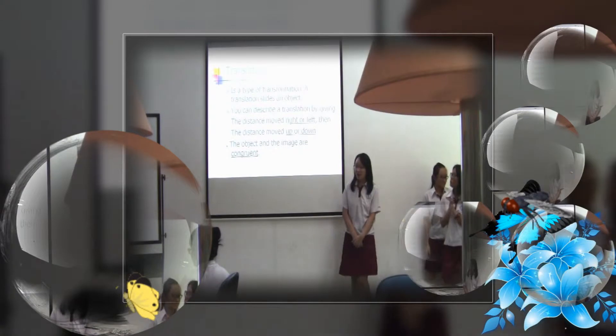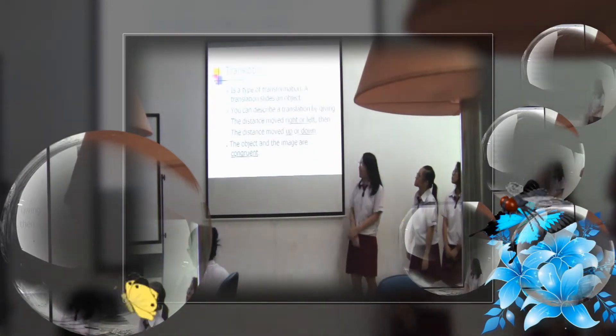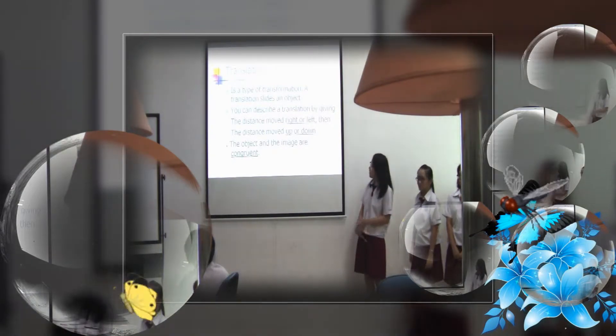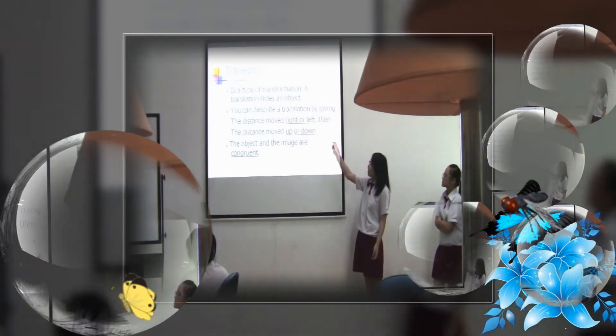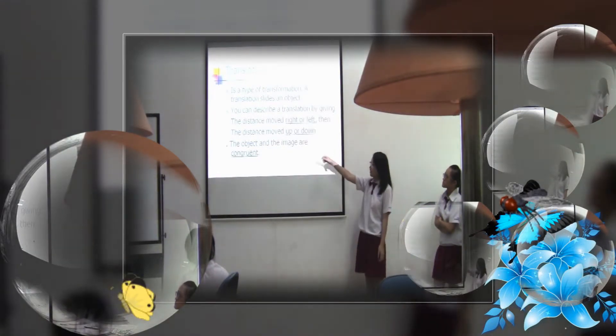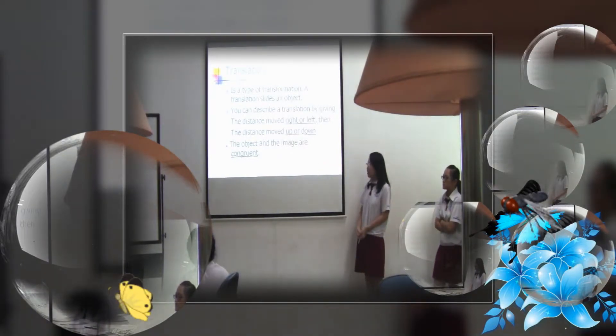So now I will talk about translation. It's a type of transformation. You can describe a translation by giving the distance right or left, or up or down. The object and the image are congruent. Congruent means exactly the same size and shape.